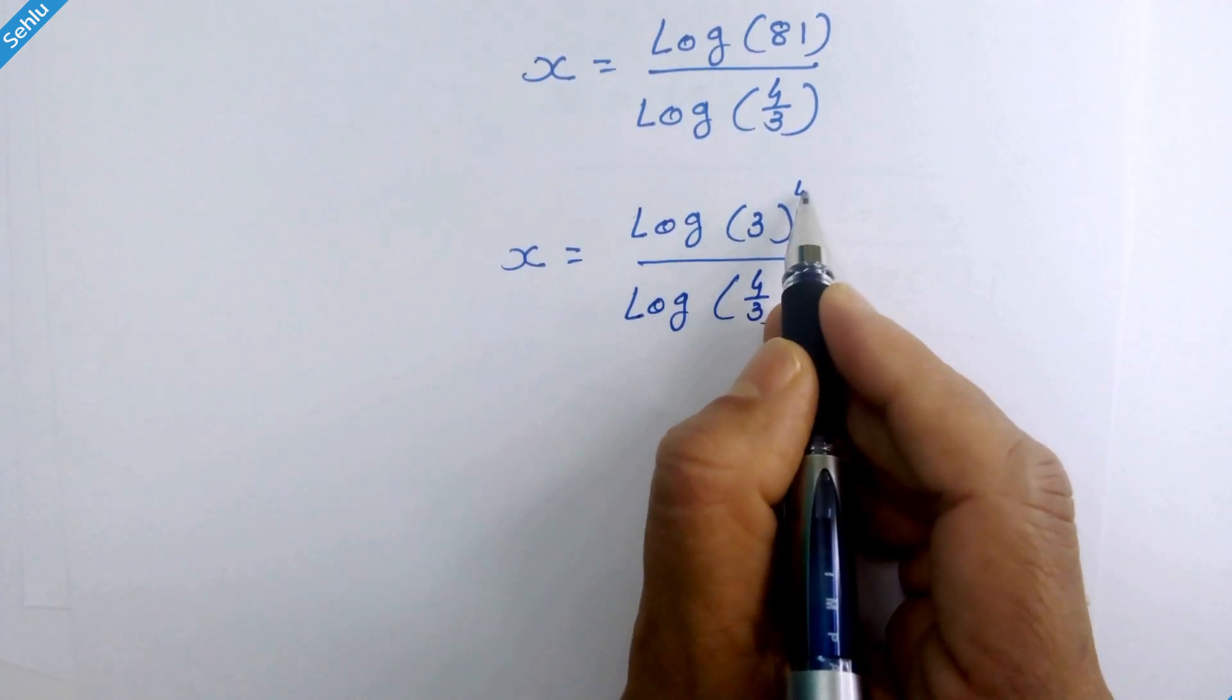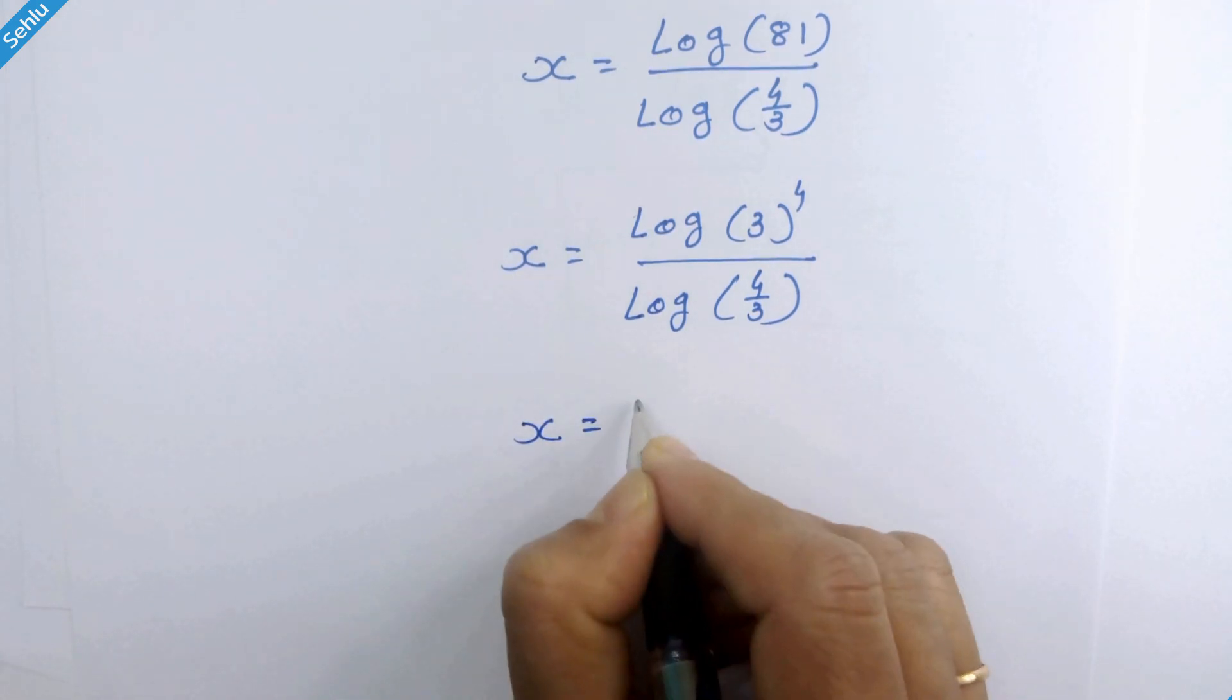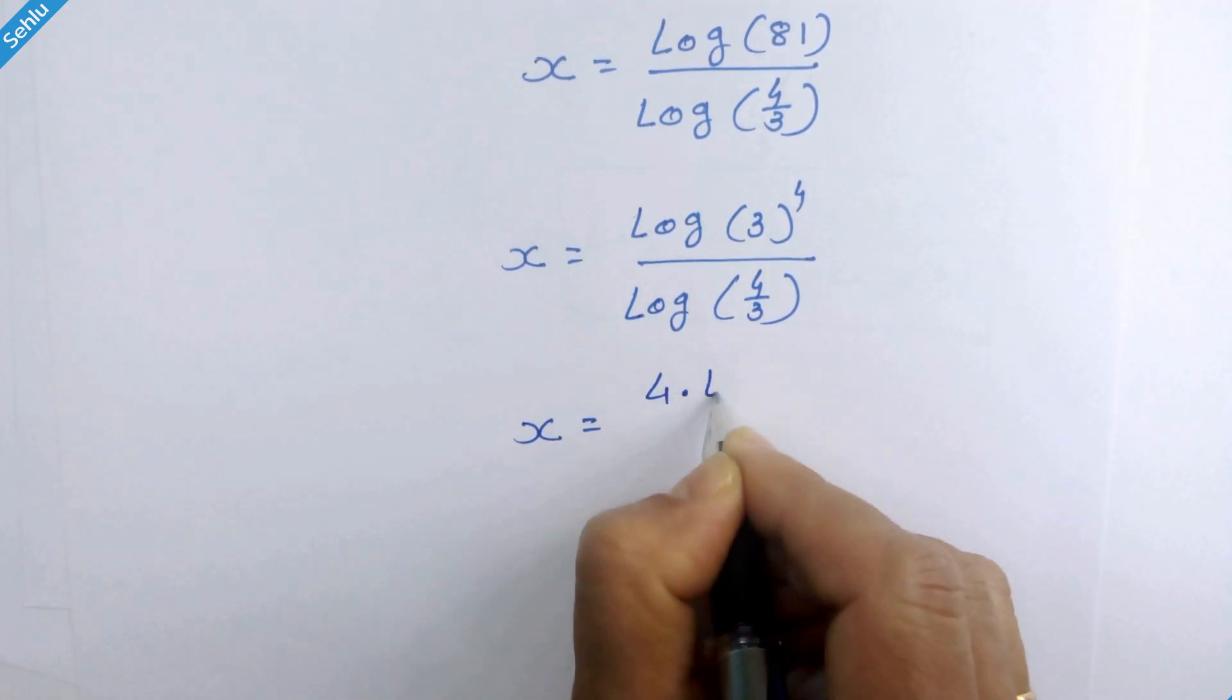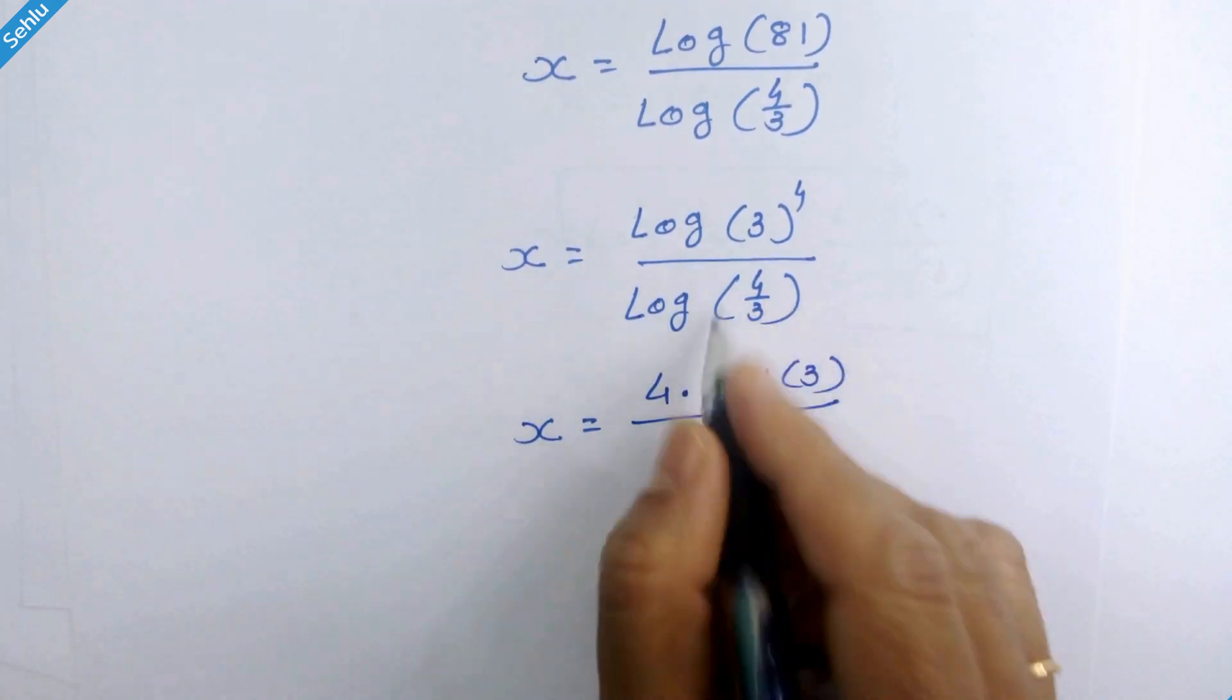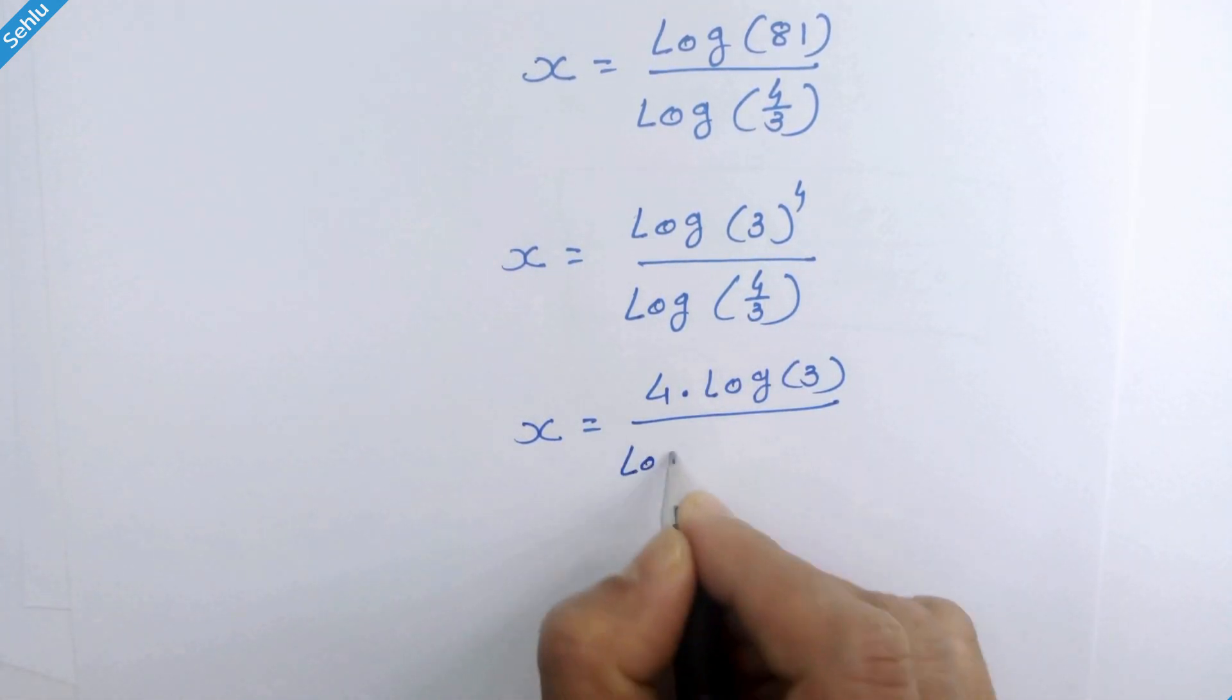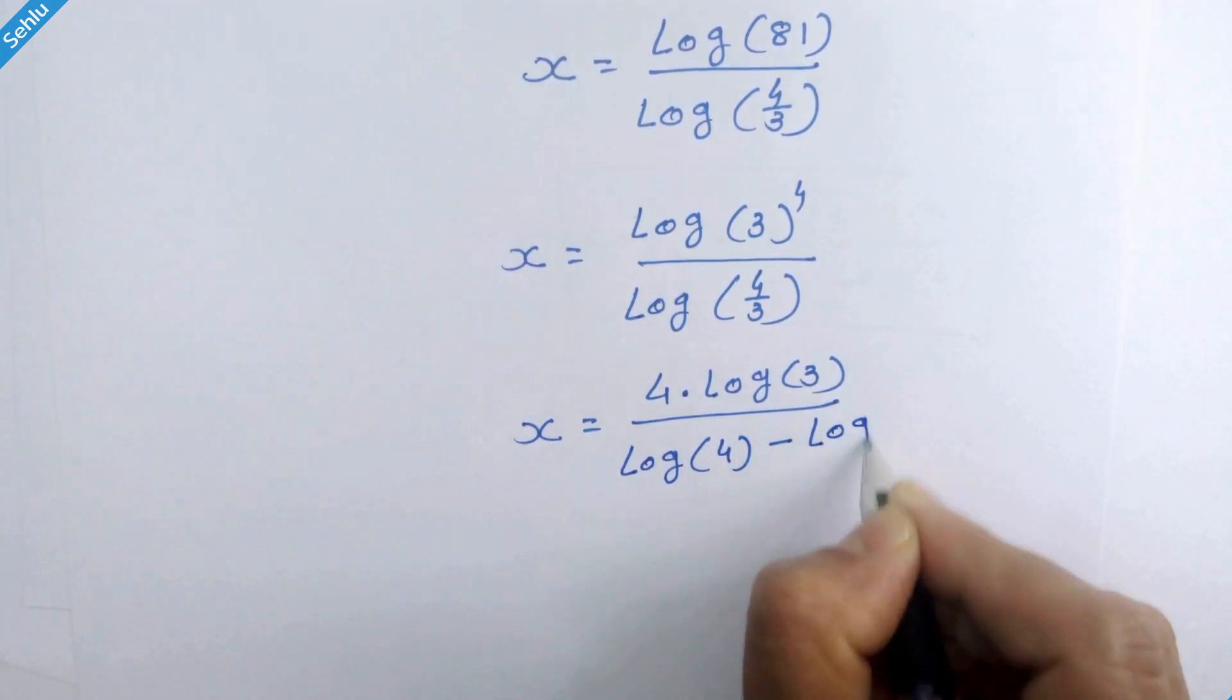Now this 4 will be placed here. So it will be x is equal to 4 times log of 3. And this part can be written as log of 4 minus log of 3.